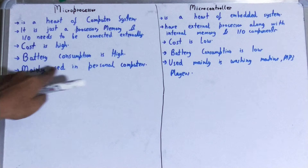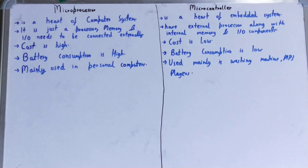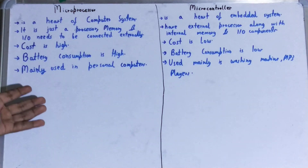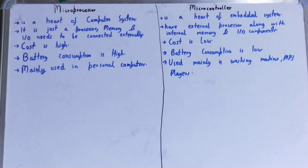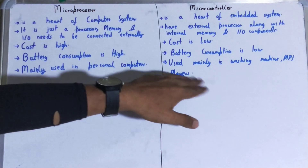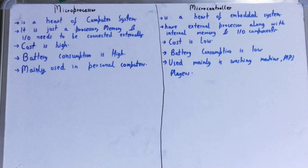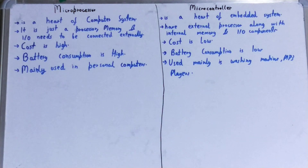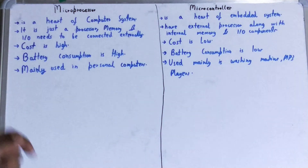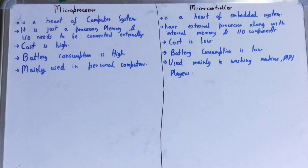Next, microprocessors are mainly used in personal computers, mobile phones, and smart devices. Whereas microcontrollers are used mainly in washing machines — where you just need to set the timing and type of cloth — and in MP3 players where you just need to play songs. These are devices that need only one or two tasks, so microcontrollers are used in them.